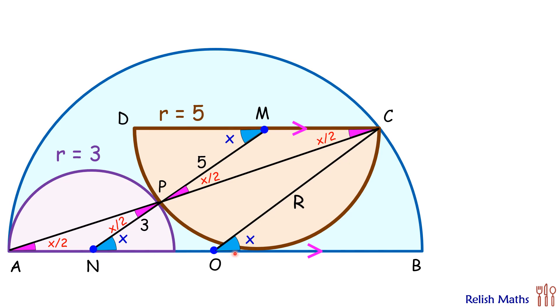Now if you'll see NM and OC, for them these corresponding angles are equal and thus we can say that NM and OC are parallel to each other.